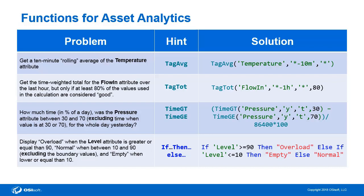If we were to try to specify the normal level after overload, we might be including too much in the range. We would need to specify that it is both greater than or equal to 10 and less than or equal to 90, which is more difficult than the approach I've outlined. There are obviously many more functions to explore, and I recommend taking a look at the Help menu to get insight on the many different functions available.